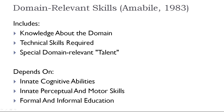Considering domain-relevant skills, this depends on several things. Innate cognitive abilities refer to the general cognitive abilities that a person may be deemed to possess. Perceptual skills include a person's ability to interpret and understand information. Motor skills refer to the ability to perform certain actions, including those which may have been learned but are now innate, such as playing a musical instrument or driving a car. Formal and informal education may include things such as school, university studies, or even self-directed study.